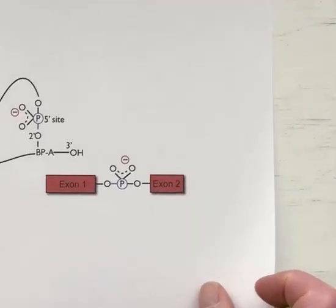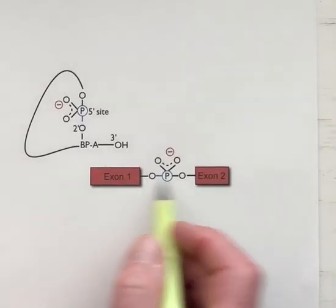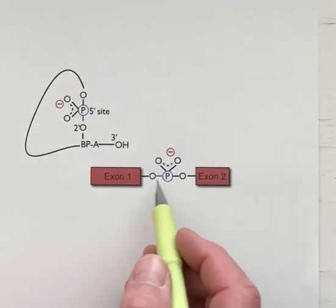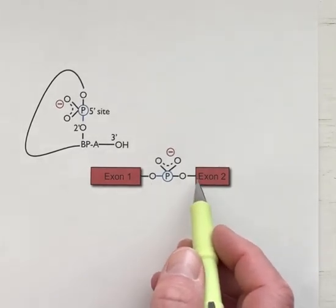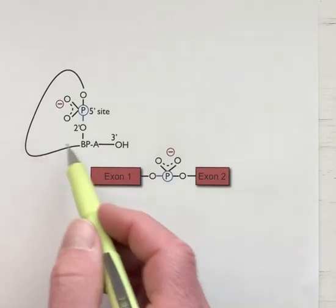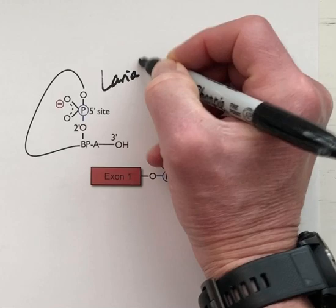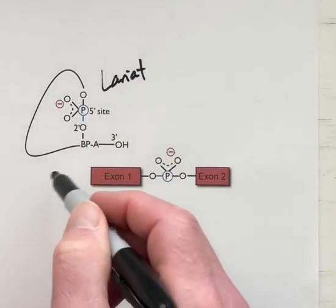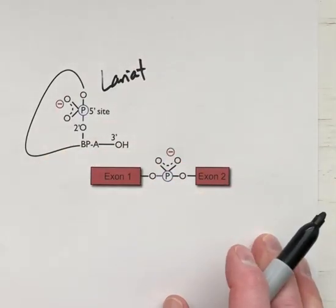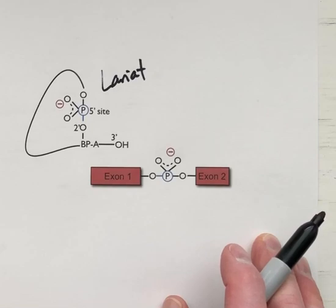We have the two exons joined by a phosphodiester linkage and then we have the intron in this what's called the lariat. Lariat - that's another name for a rope that's been converted into a loop structure or a lasso.